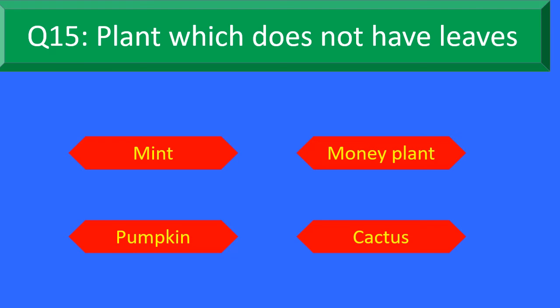Plant which does not have leaves — Option A: Mint, Option B: Money Plant, Option C: Pumpkin, and Option D: Cactus. Your time starts now.